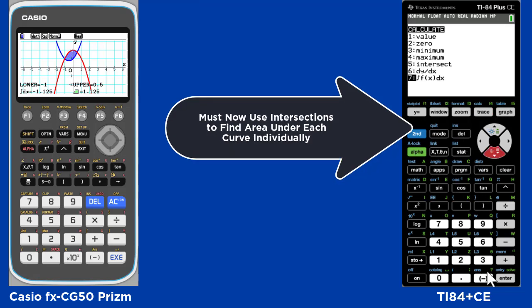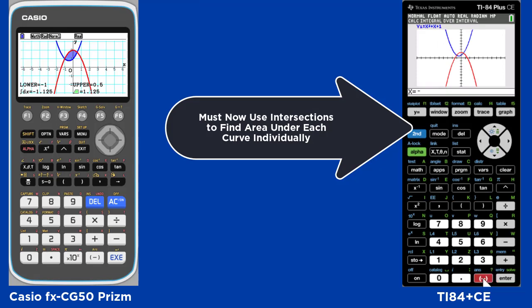Once you have the two intersections, you then choose option 7, where you're looking for the area, but you must first find the area under each curve individually and again record this area for use later.